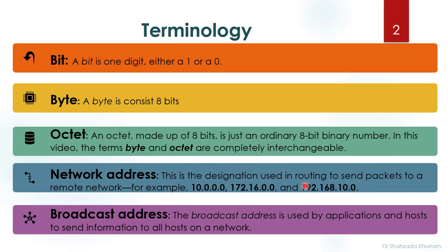A network address is a designation used in routing to send a packet to a remote network. For example: 10.0.0.0, 172.16.0.0, and 192.168.10.0 — these are network addresses. The last one is a broadcast address. The broadcast address is used by applications and hosts to send information to all hosts on a network.